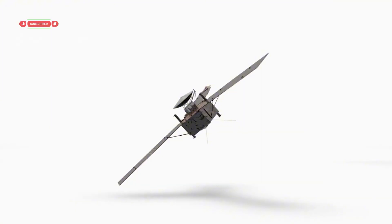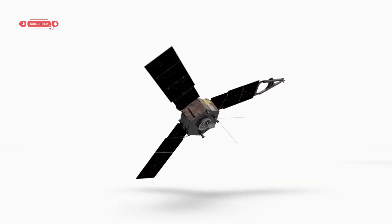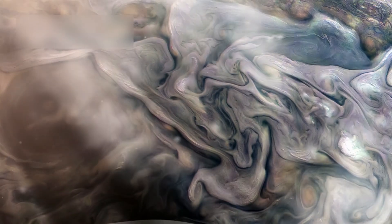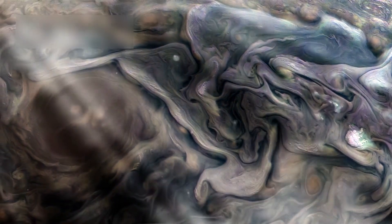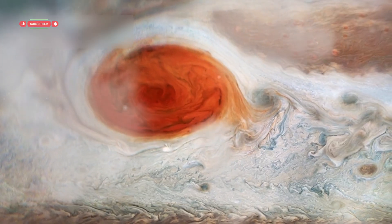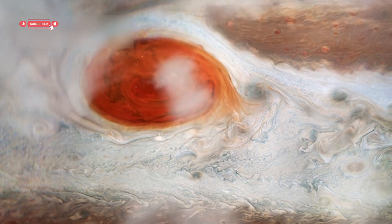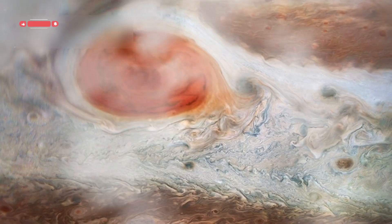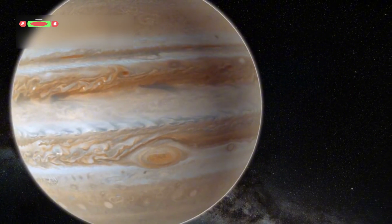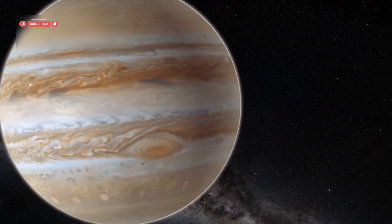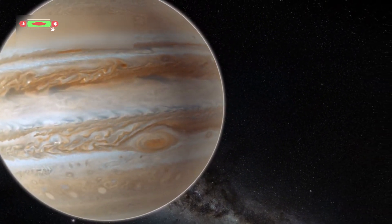At Jupiter, the Voyager probes revealed hidden wonders. They saw the swirling storms and colored bands in Jupiter's huge atmosphere with amazing clarity. The Great Red Spot, a giant storm on Jupiter, was captured in detail for the first time. The probes even discovered that Jupiter has a faint ring system of its own, and they photographed dozens of small moons orbiting the giant planet.